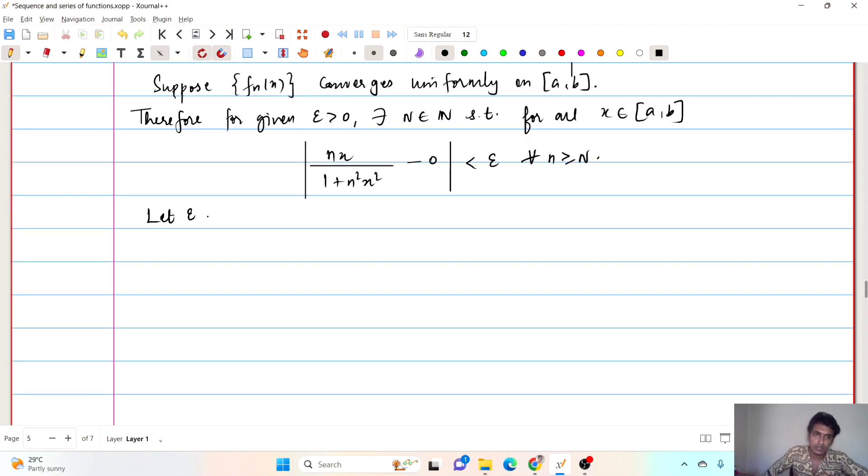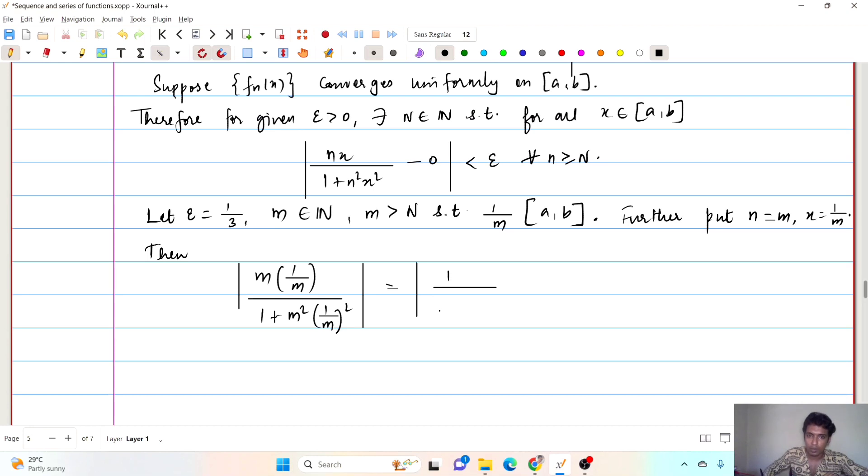Okay. Now, let us choose epsilon to be 1 upon 3. M is a positive integer which is greater than n such that this 1 upon m is in the interval [a,b]. We are identifying one such m. Further, put n equals m itself and x equals 1 upon m. Then what happens? Then, absolute of n times x is 1 upon n. So, it is m times of 1 upon m divided by 1 plus m square into 1 upon m whole square which is nothing but 1 upon 1 plus 1 which is half but we will have to prove that it is less than 1 upon 3 but it is not the case.